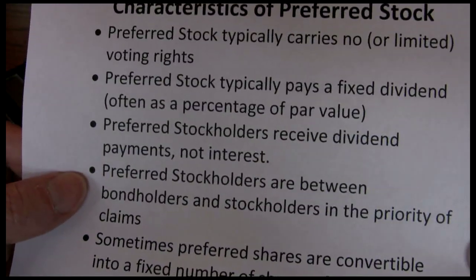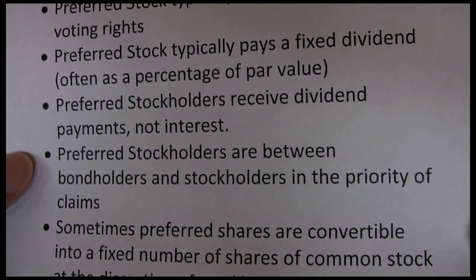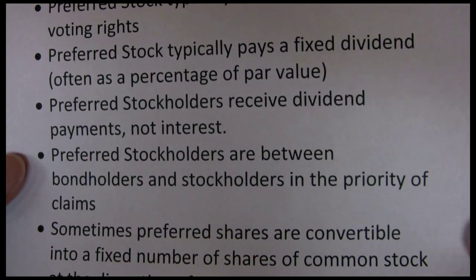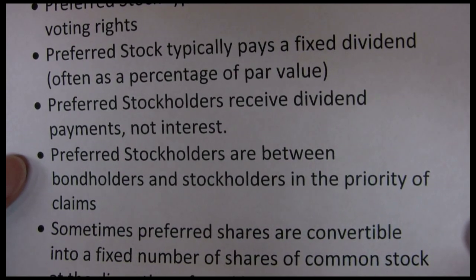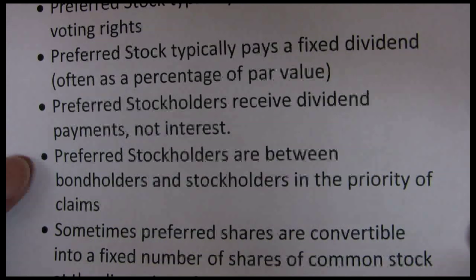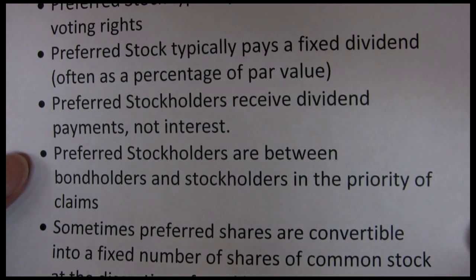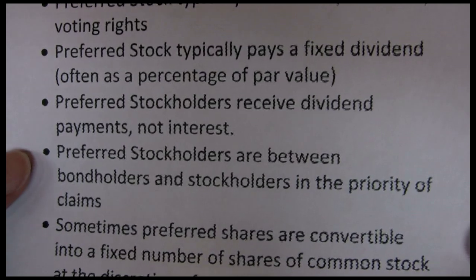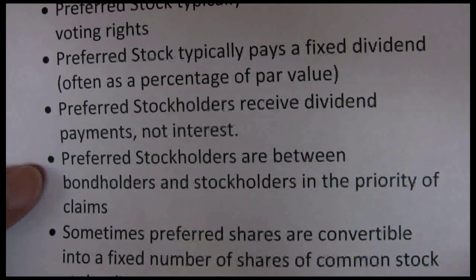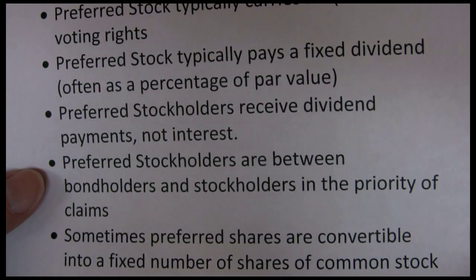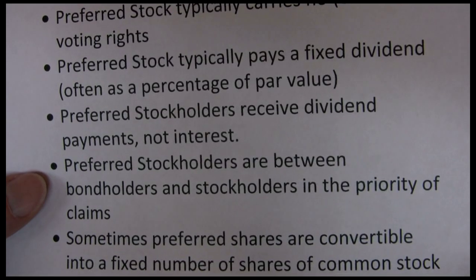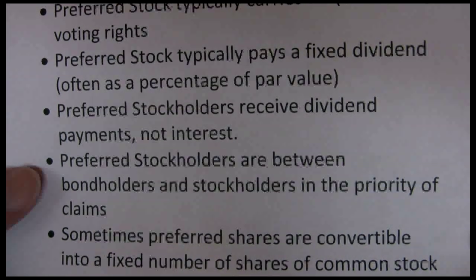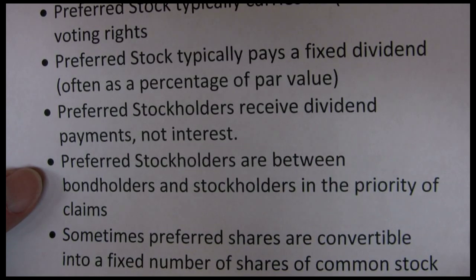Preferred stockholders are between bondholders and stockholders in the priority of claims. Bondholders get paid first, then preferred stockholders get paid second, and lastly we have the common stockholders. In the event of bankruptcy, bondholders are paid first. If there's any capital left over, it goes to preferred stockholders, and then finally if there's anything left over, it goes to common stockholders. It's very rare that common stockholders would get anything in an event of bankruptcy. This also refers to regular income: bondholders are paid their coupon payments first, then preferred stockholders get paid dividends, and finally if there's anything left over, the common stockholders get dividends.